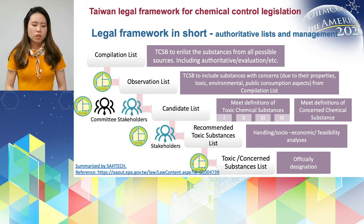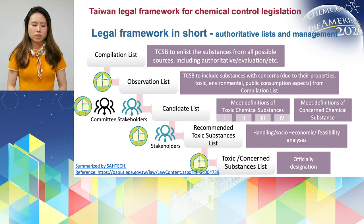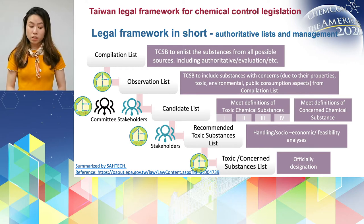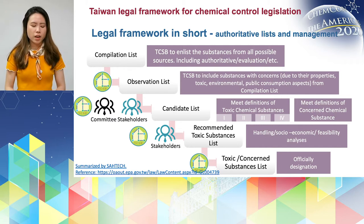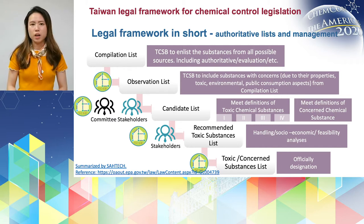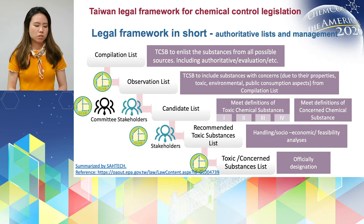The next step is to make the recommended toxic substance list. In this step, TCSB will incorporate stakeholders' comments and consider handling details and socioeconomic or feasibility analysis to decide if the chemical substance should be announced as a toxic chemical substance or a concerned substance. After the evaluation, EPA or TCSB considers all possibilities and the chemical substance will be formally identified as toxic or concerned chemical substance.